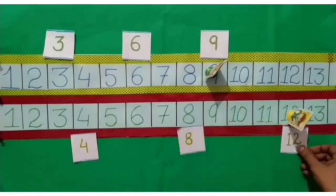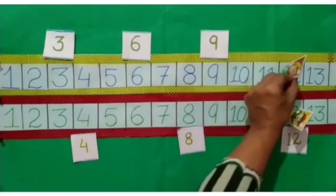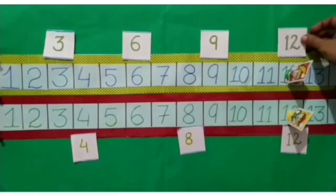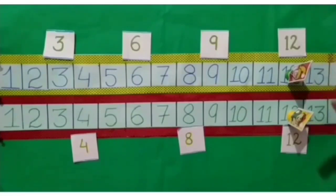Now from here Rohit jumped to 12. Now Pinky's turn. She jumped from here to 12. Now Pinky and Rohit meet at 12.